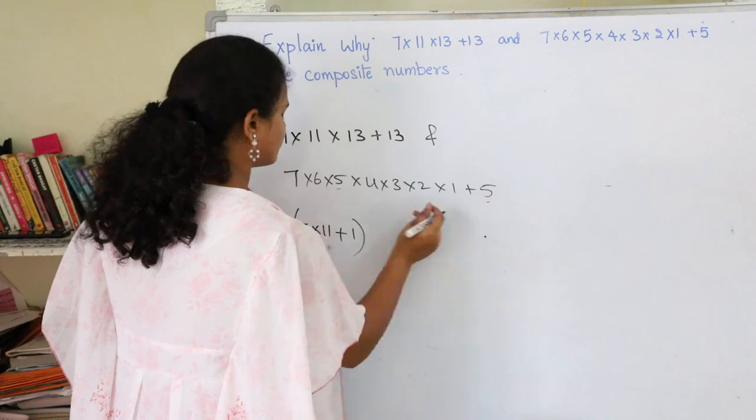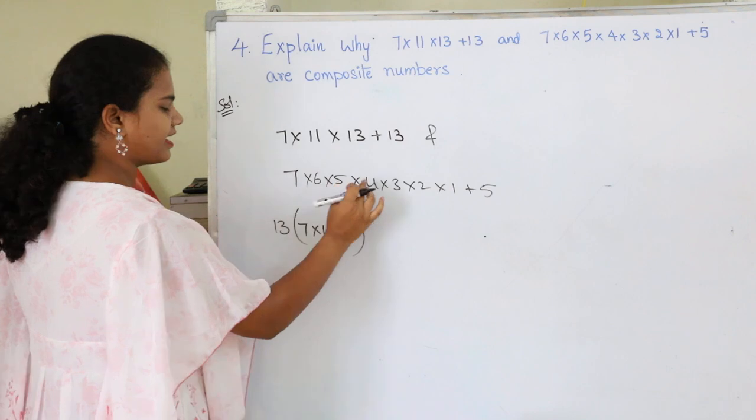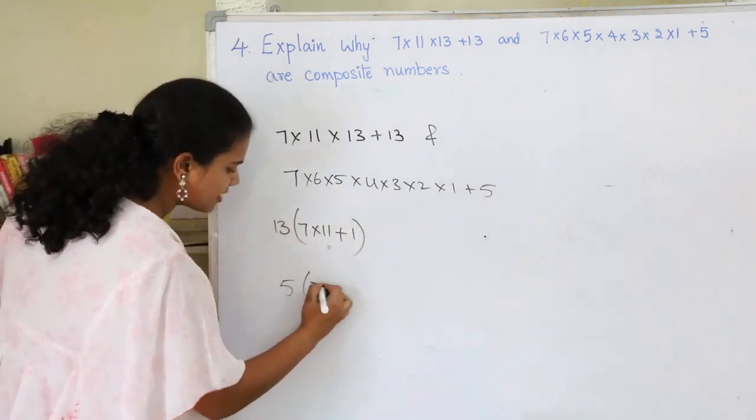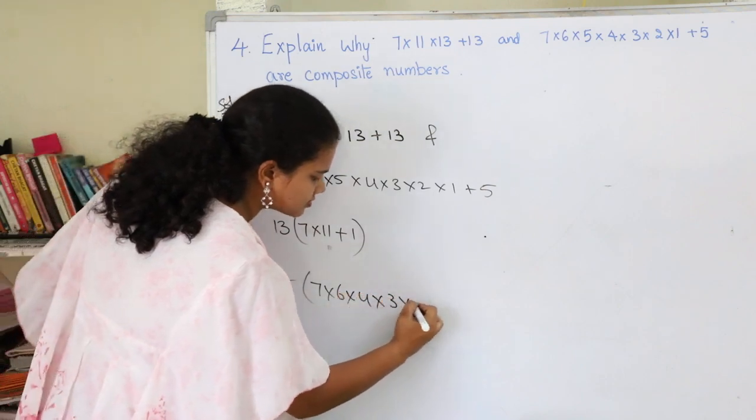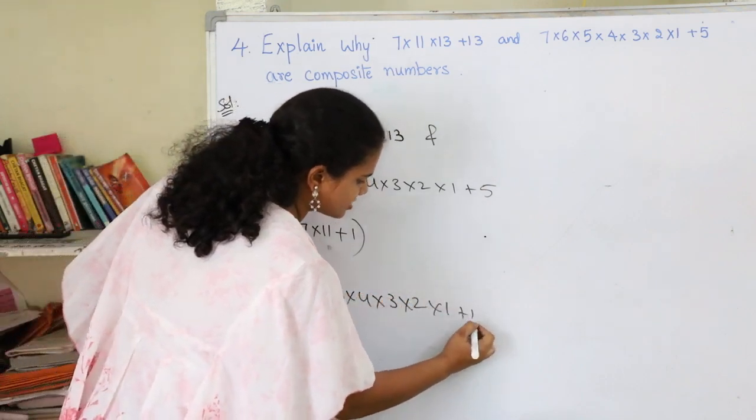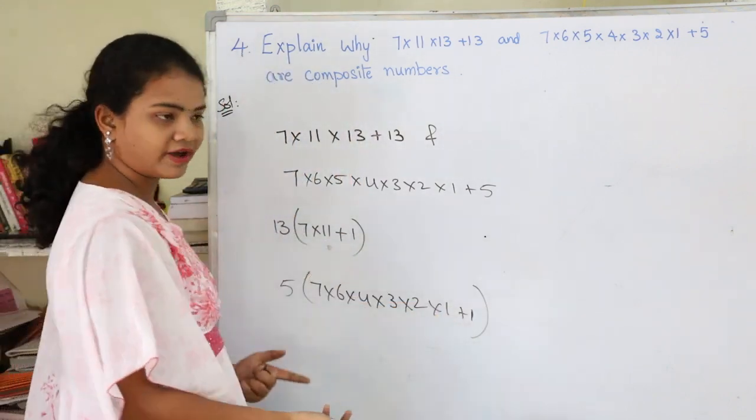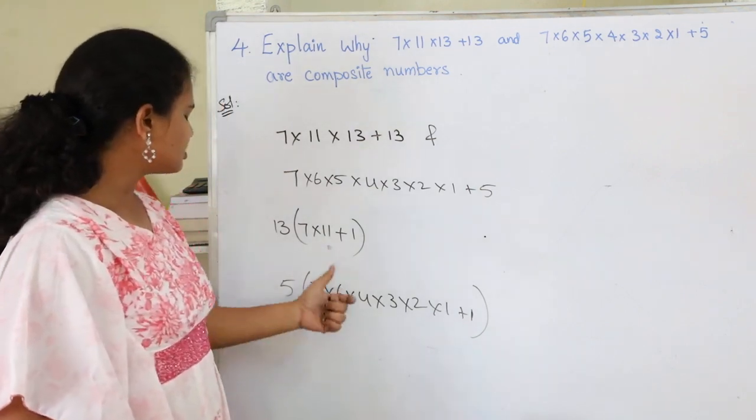For the second equation, take 5 as common. This gives 5 times (7 × 6 × 4 × 3 × 2 × 1 + 1), since 5 × 1 gives 5.